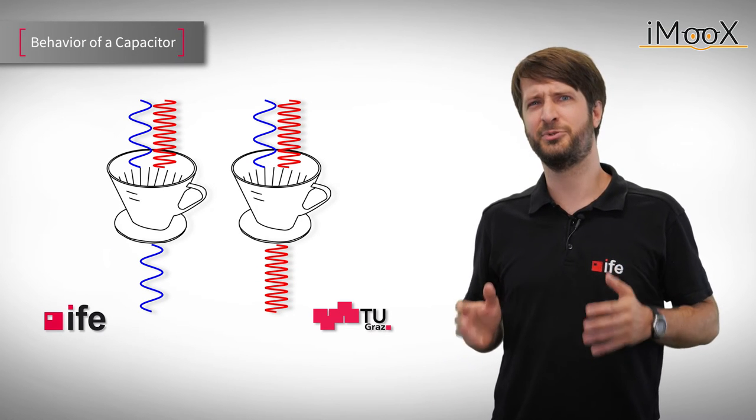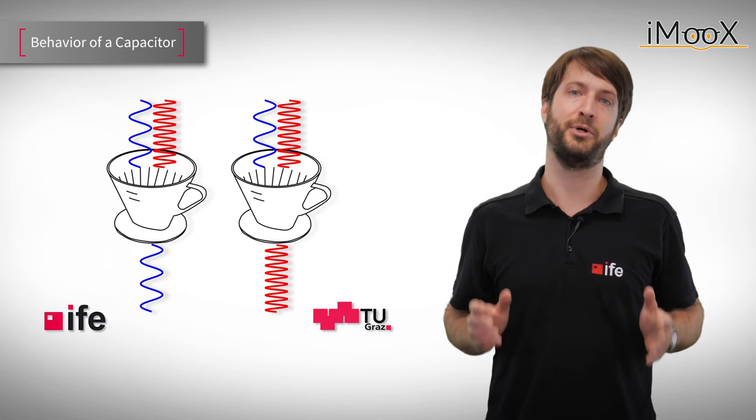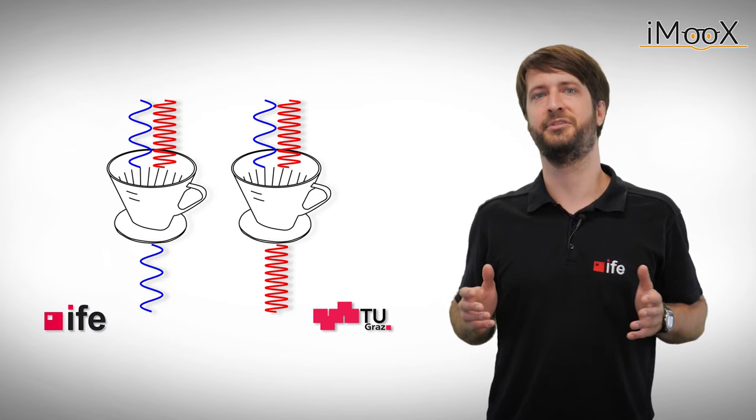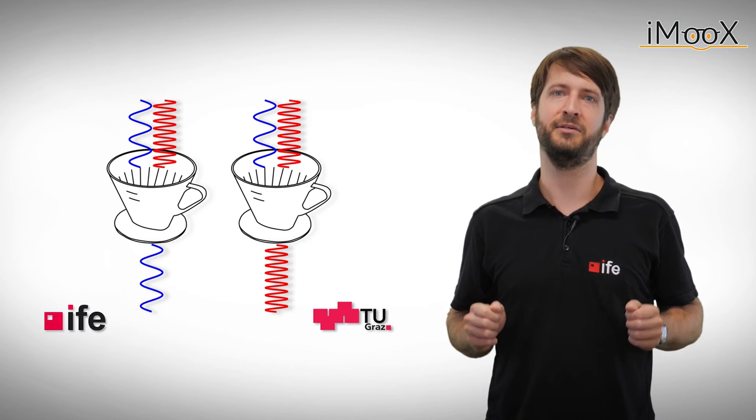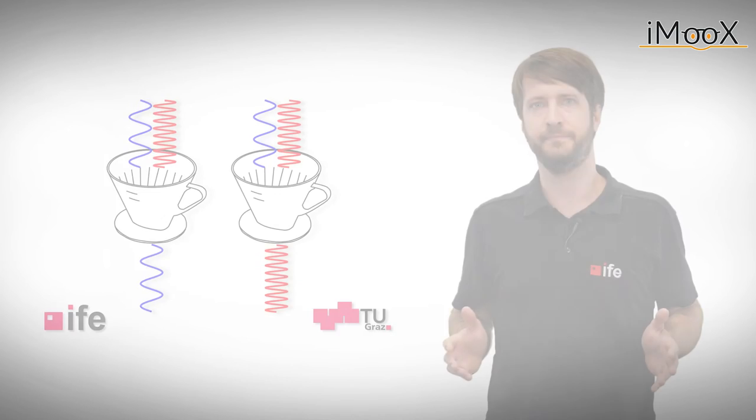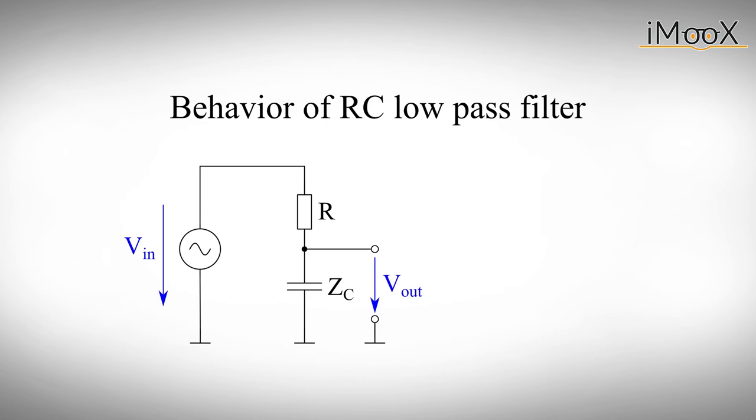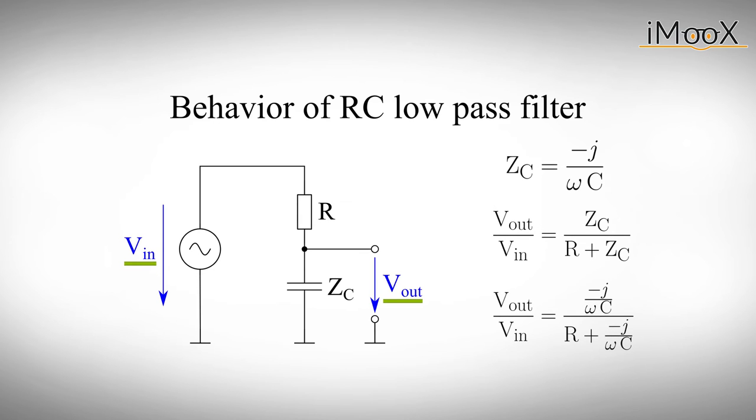We now know that at the frequency extremes our filter will behave just the way we want it to. But what happens in between those extremes and where is our corner frequency fc? To get to the bottom of this, we again need to think of our filter as a frequency-dependent voltage divider. If we want to know the frequency behavior of a filter, we actually want to know the answer to the following question: What does the output do in dependency of the input? In other words, we want to know what is the output voltage Vout divided by the input voltage Vin. As we already know from the voltage divider, this relation can be explained in terms of the respective impedances.